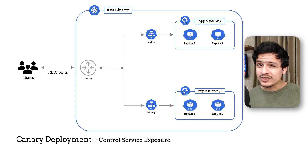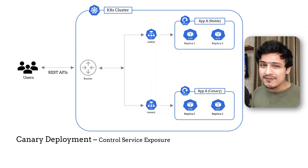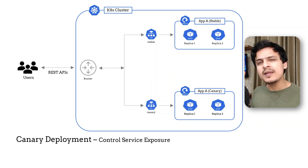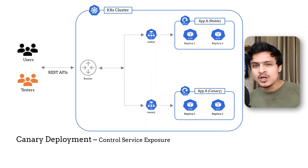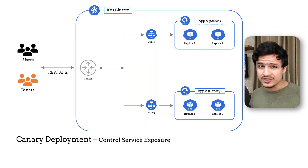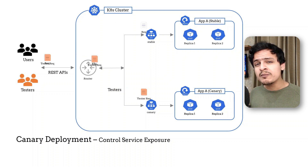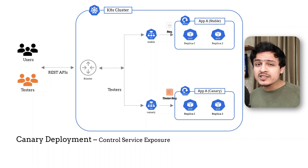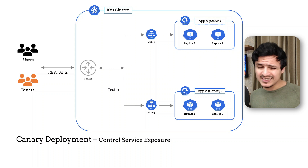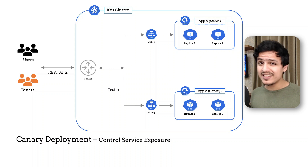Another way to do this is to control what kind of users have access to the new version. Maybe you have a bunch of alpha users or a QA team who want to test the new features before anyone else. In this case we are limiting the impact of bugs to a specialized subgroup which kind of expects things to fail anyway, so the impact isn't that large.